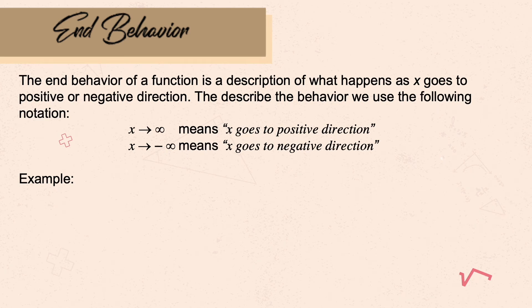Let's have now the last concept in the graph of a function. We're talking about here the end behavior of the graph. The end behavior of a function is a description of what happens as x goes to the positive or negative direction. To describe the behavior, we use the following notation.